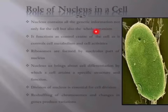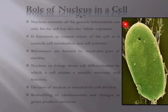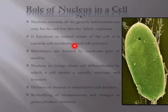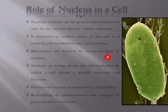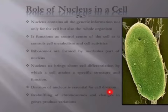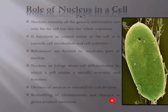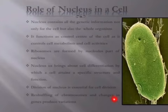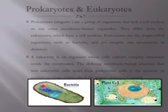Role of nucleus: Nucleus contains all the genetic information. It functions as the control center of our cell and controls metabolism and cell activities. Ribosomes form ہوتے ہیں nucleolus میں۔ Nucleus brings about cell differentiation — the cell attains a specific structure and function. Division of nucleus is essential for cell division — اگر nucleus کی division ہوگی تو ہمارا cell بھی divide کرے گا۔ Reshuffling of chromosomes causes changes in variation — کسی بھی بندے میں کوئی بھی type کا change آتا ہے تو وو cause of reshuffling of chromosome ہے۔